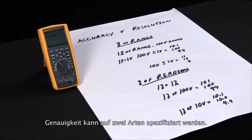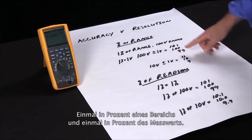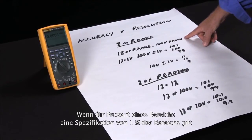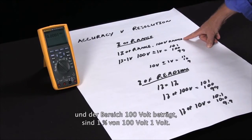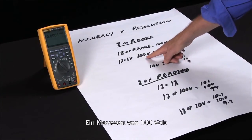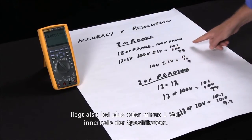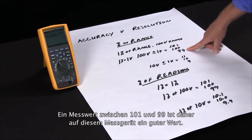There are two ways accuracy is specified: percent of range and percent of reading. For percent of range, if we have a one percent specification of range and we're on a hundred volt range, one percent of a hundred volts is one volt. So with a reading of a hundred volts, the reading can be within specification at plus or minus one volt — a reading between one hundred one and ninety nine is actually a good reading on this meter.